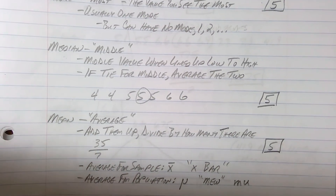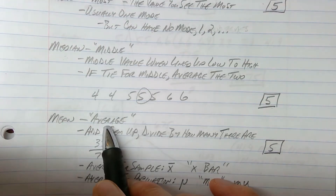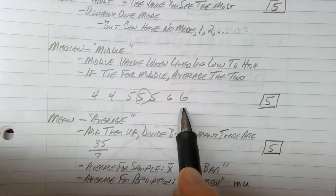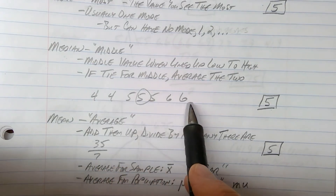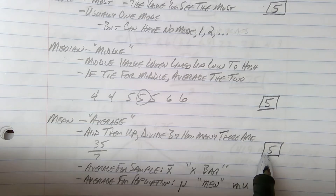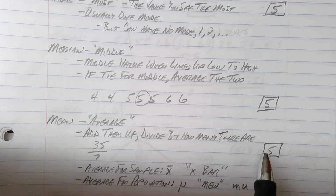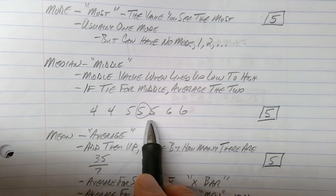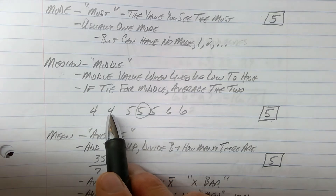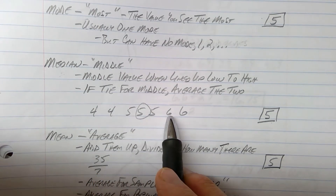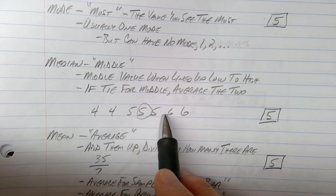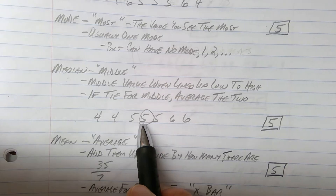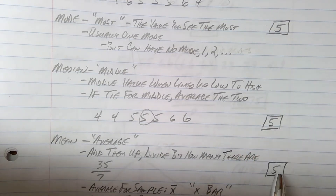Finally, mean is the one that most people use — they average. Mean stands for average: add all the values up and divide by how many there are. In this case, the values add up to 35 and there are seven values, so I divide by 7 and get 5. So five is our mode, five is our median, and five is our mean. We have a nice symmetrical data set: for every low value of four, there's a high value of six — they cancel out. In a symmetrical distribution, all three values will be the same.